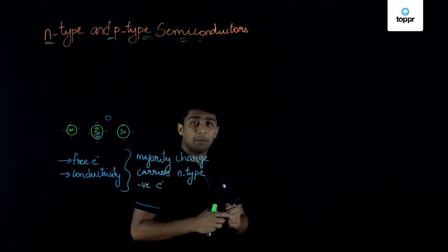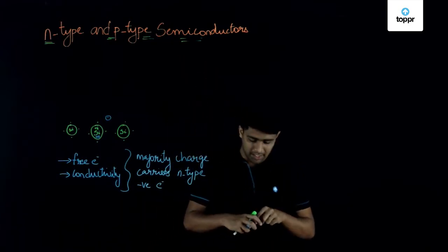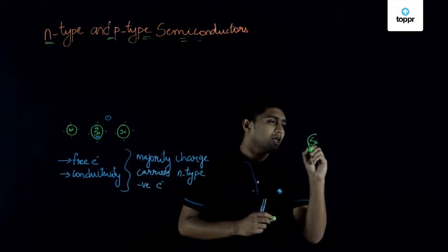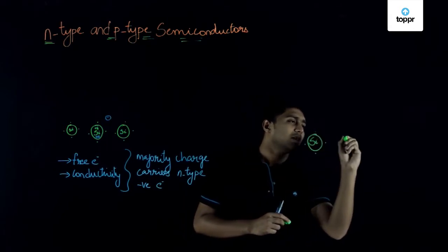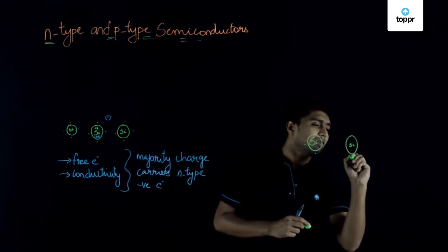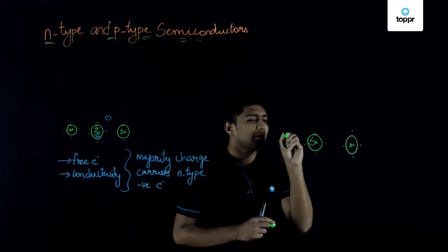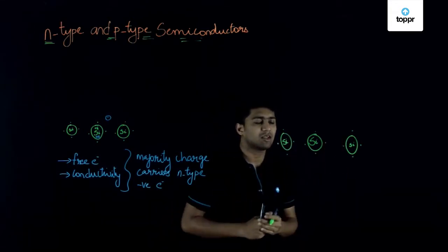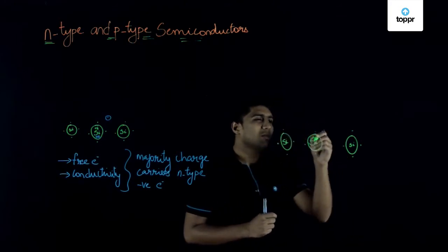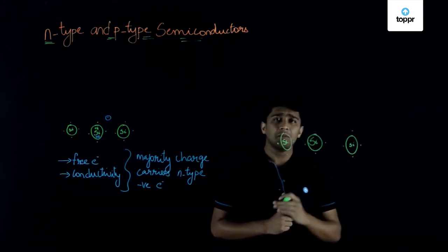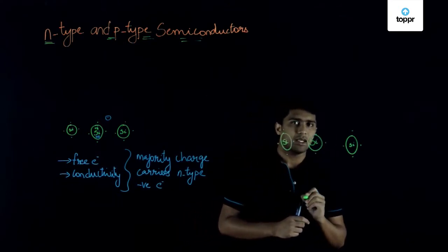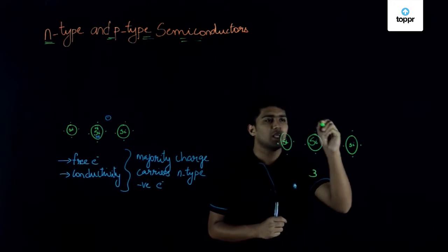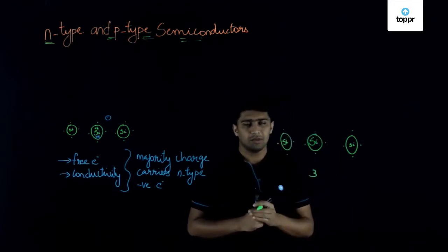When we consider a p-type semiconductor, we take the same silicon crystalline structure where silicon has 4 electrons in its outermost shell. When it becomes a crystalline structure, we have many silicon atoms. In order to improve its conductivity, we add an impurity. We add a trivalent impurity, which means the valency of the impurity is 3 — meaning 3 electrons are revolving in the outermost shell.